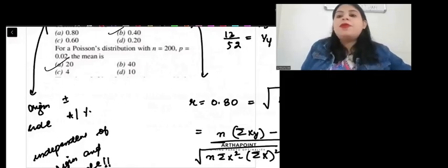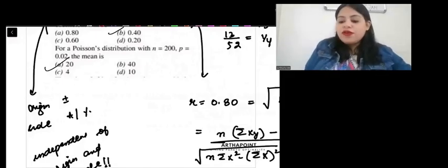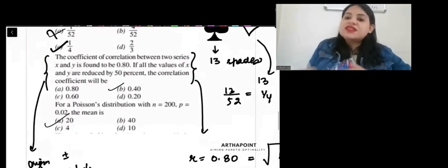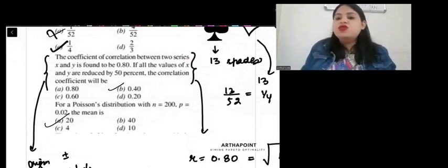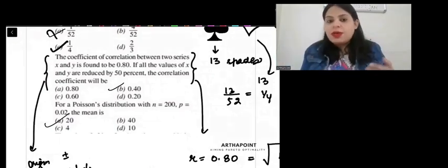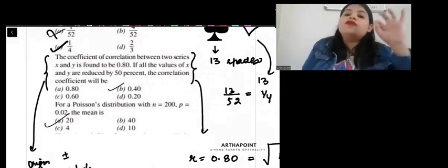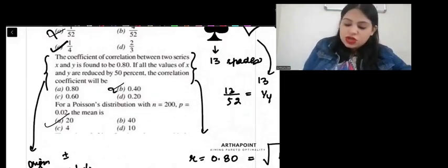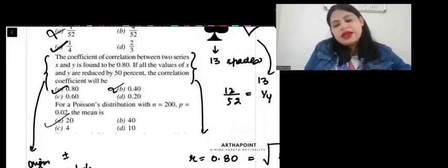It is not dependent on the choice of origin or scale. That means, it is independent of origin and scale. When you change origin or scale, the coefficient correlation will not be affected. If all x and all y values are multiplied by the same, or divided by the same, the correlation coefficient will not be affected. It is independent of scale and origin. So, it will remain the same. So, answer is A.